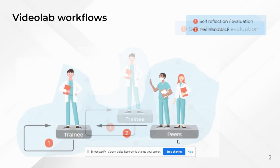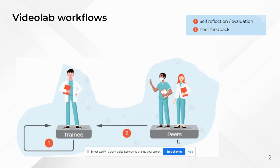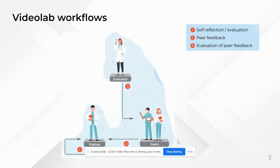This can also be done by peers horizontally, in the sense that fellow trainees look at each other's videos and then mostly informally give feedback. This can be done informally in the context of learning, or formally in the context of evaluating. This interaction can then be analyzed by an evaluator who gives feedback on the feedback between students. This is how Rotterdam uses it.